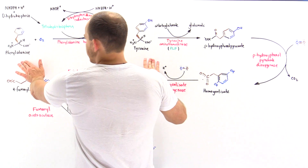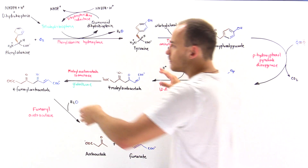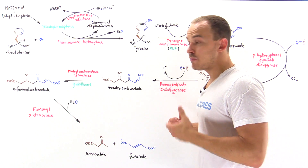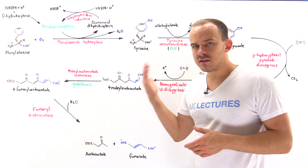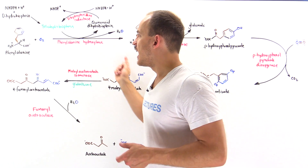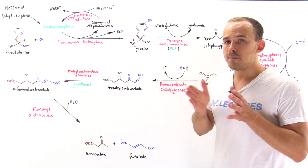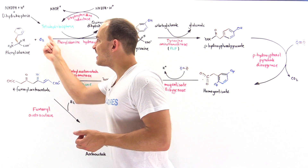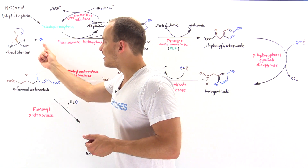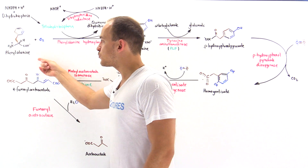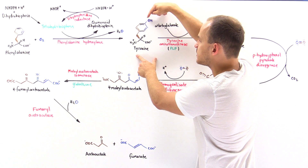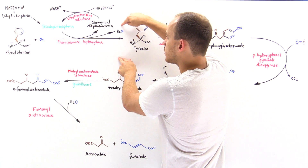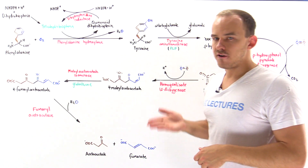Step one shows us that we can transform phenylalanine directly into tyrosine, and this is precisely how our cells can synthesize tyrosine by beginning with phenylalanine. The enzyme that catalyzes step one is phenylalanine hydroxylase, and this enzyme is a mixed function oxygenase. It uses diatomic oxygen: one oxygen atom is placed on the phenylalanine to form tyrosine, and the other oxygen atom goes to form water — which is why water is released in this step.